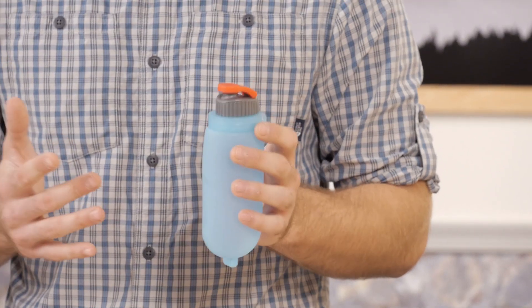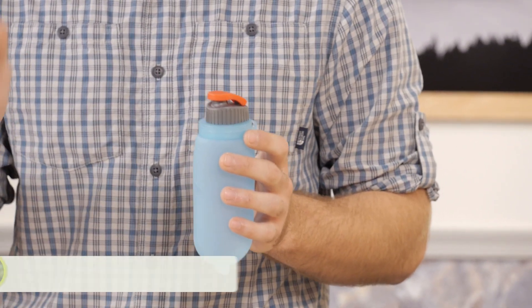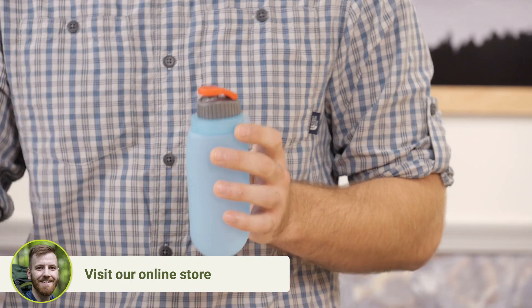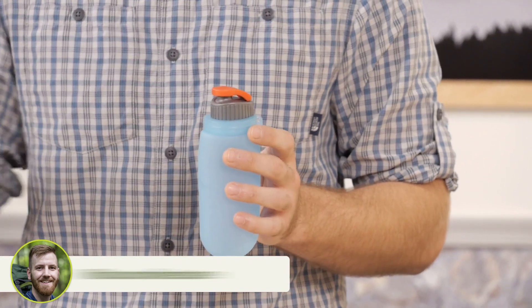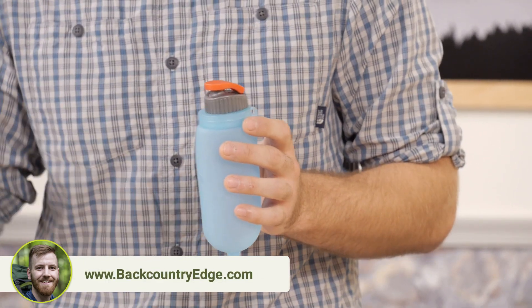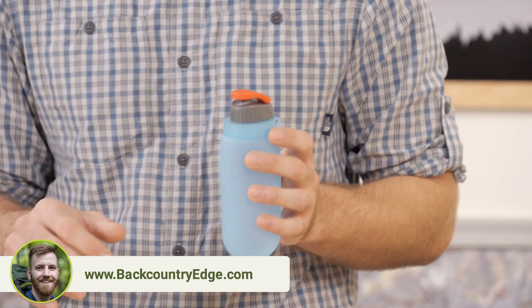Weighing only 2 ounces, the Formula 250 carries just that, 250 milliliters of gel. That's enough room to store 5+ standard gel packets, depending on the manufacturer.